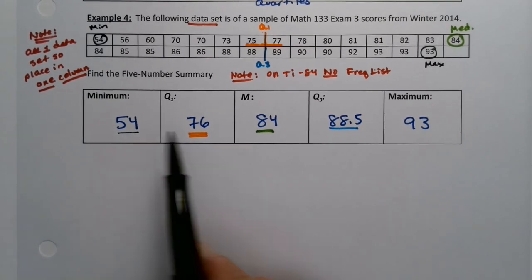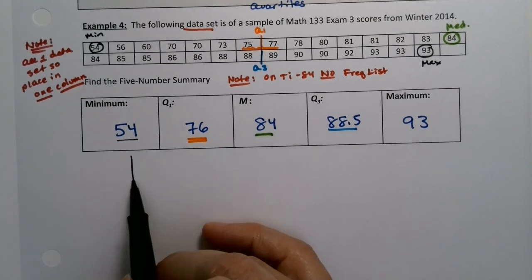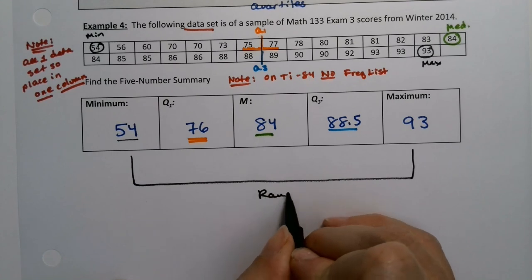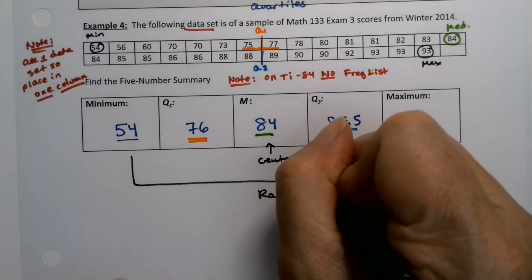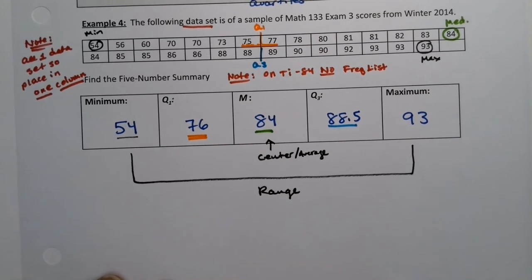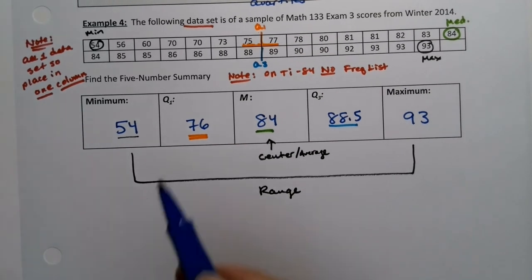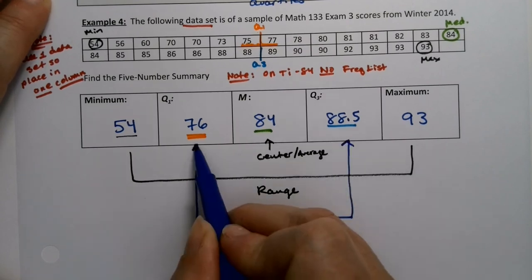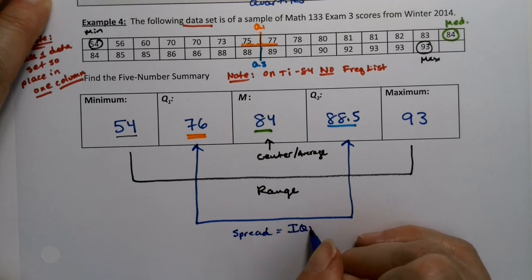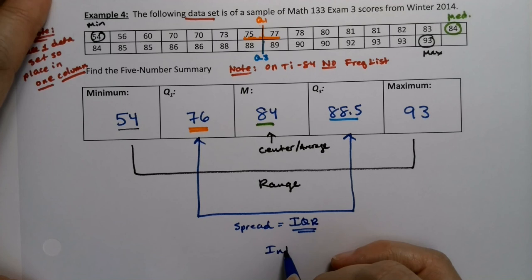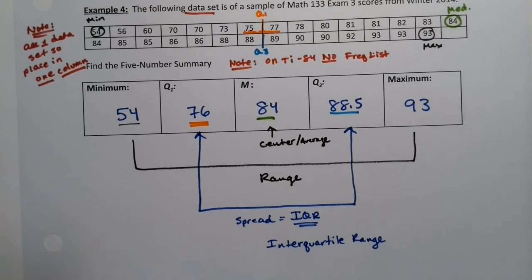But notice, having these five numbers gives us all sorts of ideas. We know the range is from here to here. Right? We know the center is right here, right? The average. And then there's something else. The distance from Q1 to Q3 is another measure of spread. That's different from the range. It's called IQR, the interquartile range. And we'll see that in the next video.